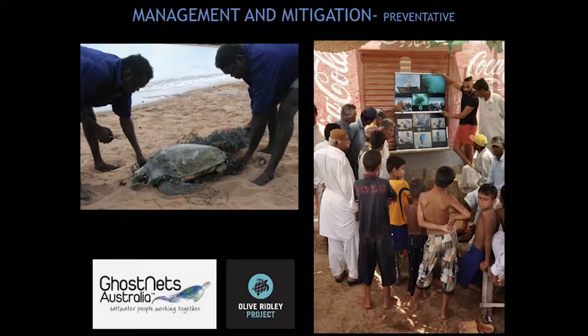Ghost Nets Australia, working in the Gulf of Carpentaria in northern Australia, is another good example. They have been working on the effects of ghost nets for around 10 years and have recovered over 5,000 ghost nets. They have been working with indigenous Aboriginal people in Australia, building a relationship based on trust — educating them and enabling them to patrol beaches and recover gear. They are doing it because they understand the implications of lost gear on the marine environment — another good indication that education works as a preventative measure.